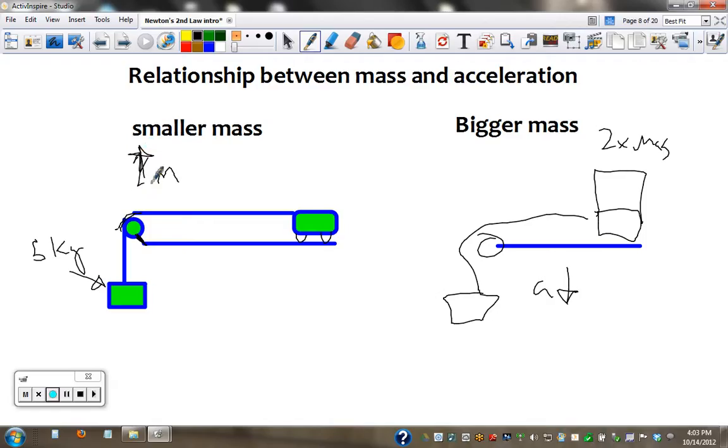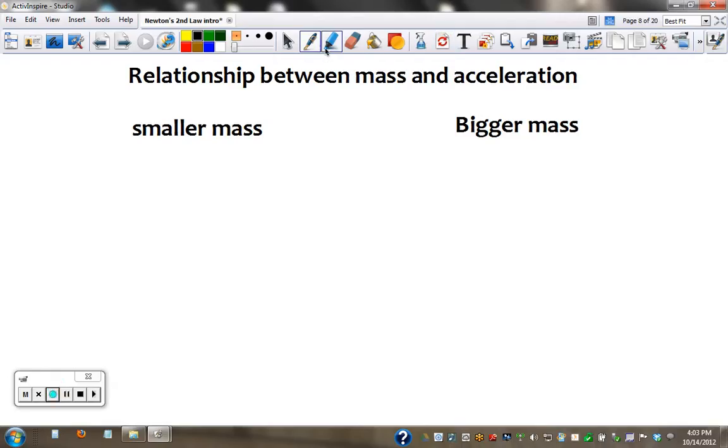When there was less mass to move. Increase, sorry. Mass goes down. Acceleration goes up. So this is what we call an indirect relation. If you decrease mass, then acceleration increases. And it looks like this. Acceleration is indirectly related to mass.